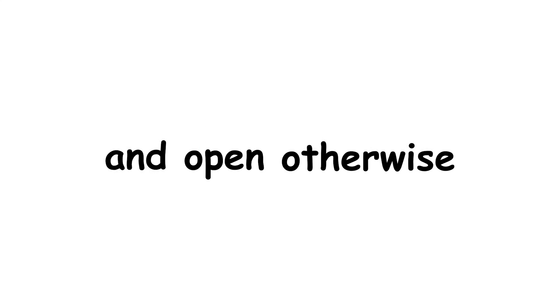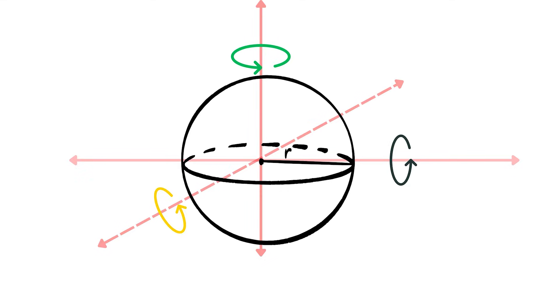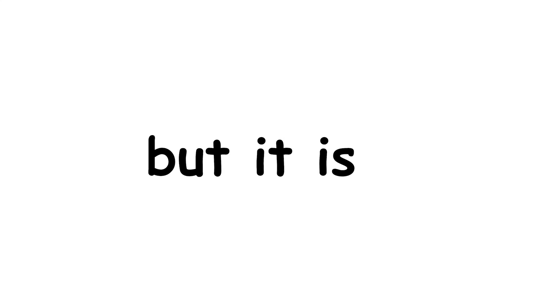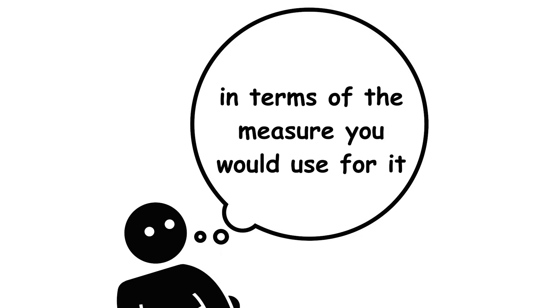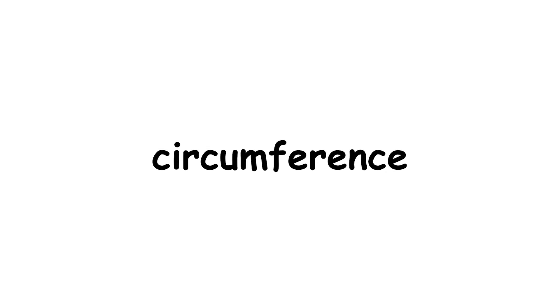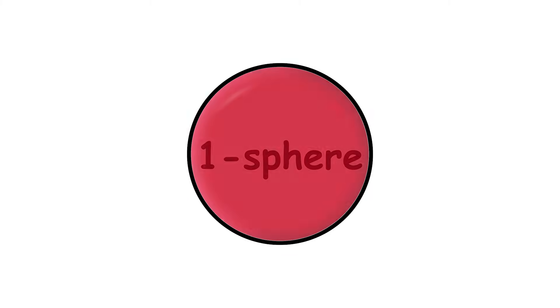A hyperball is closed if its bounding hypersphere is a part of it, and open otherwise. In mathematical terms, the dimension of an object is the number of degrees of freedom you have to move on it. A circle exists in two dimensions of space, but it is a one-dimensional object, as you only have one degree of freedom on it — along the circle. You can also think of an object's dimension in terms of the measure you would use for it: length, area, volume, and so on. The circle is a curve, so it is measured by its length — its circumference — making it one-dimensional. A hypersphere of dimension n can be called an n-sphere, and a hyperball of dimension n, an n-ball. So a circle is a one-sphere, and a disc a two-ball.